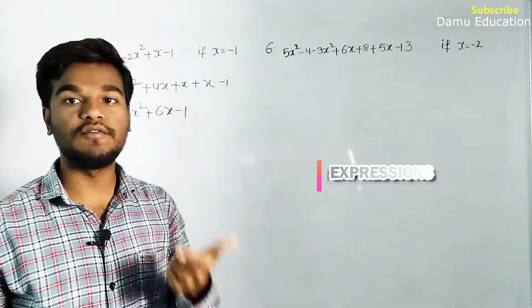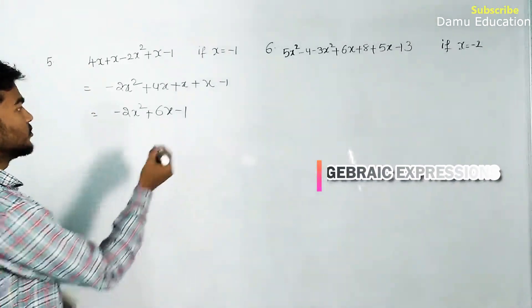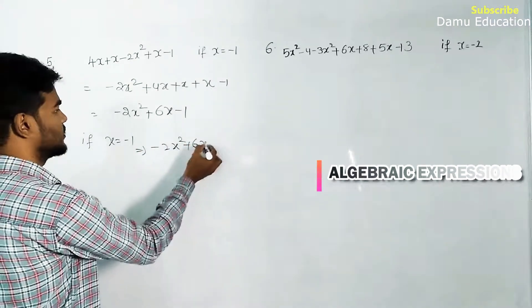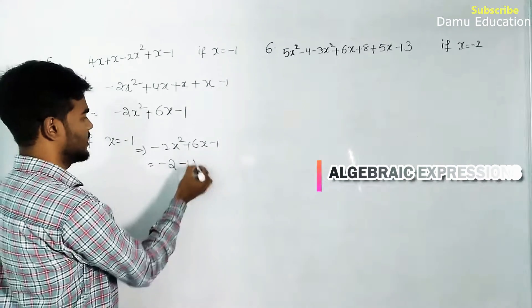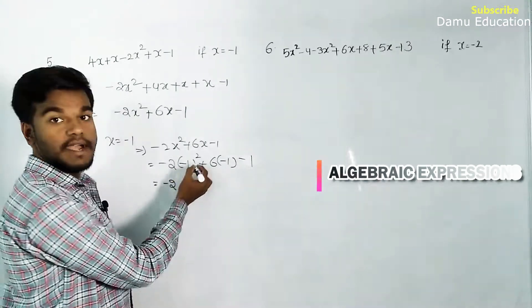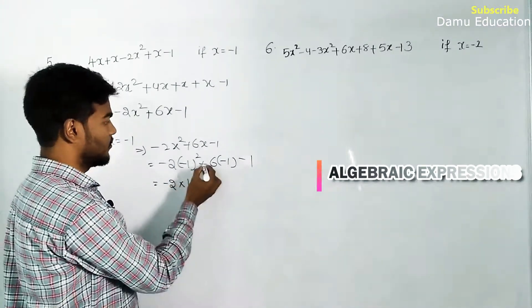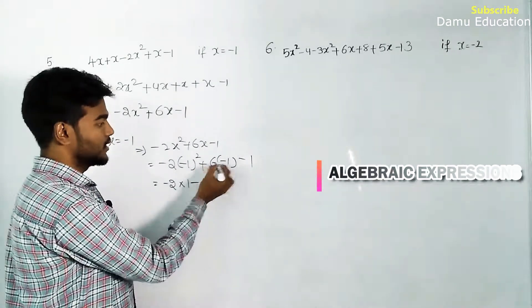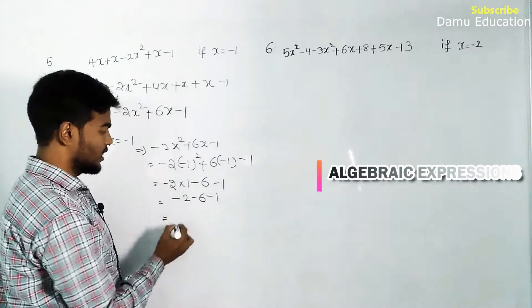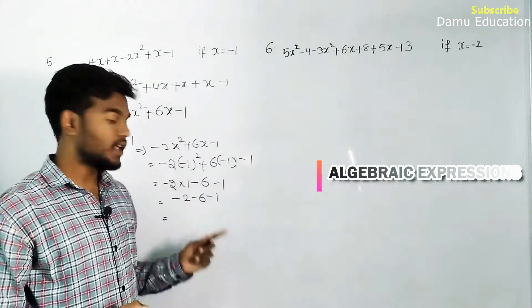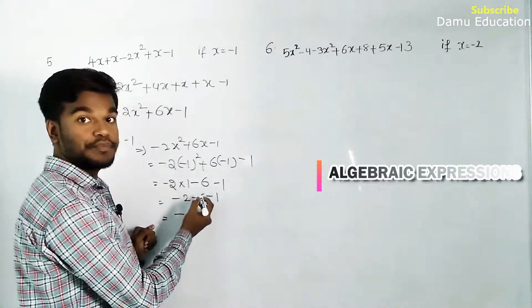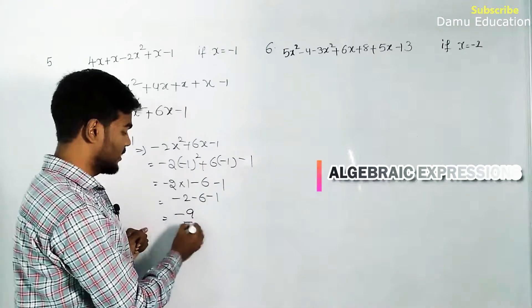If x = -1, then -2x² + 6x - 1 becomes -2(-1)² + 6(-1) - 1. This equals -2(1) - 6 - 1. All values are negative, so add the numbers and put minus: 2 + 6 + 1 = 9, so minus 9 is the answer.